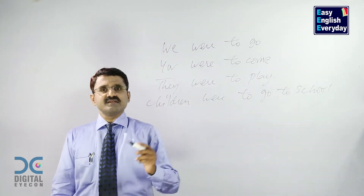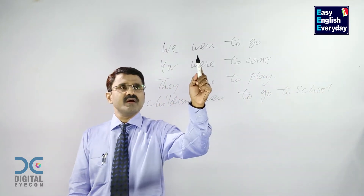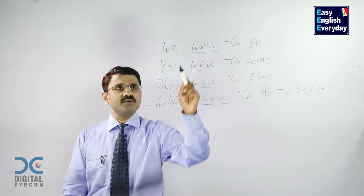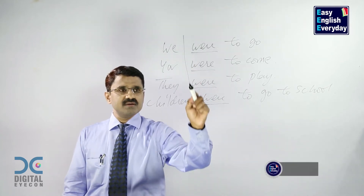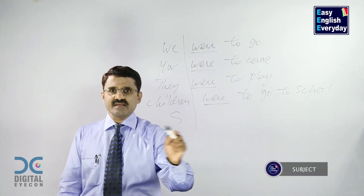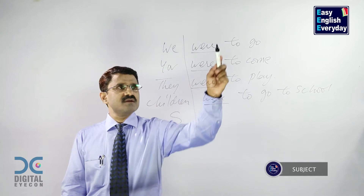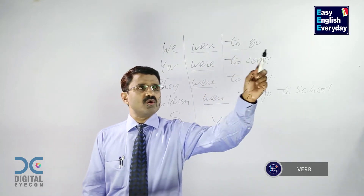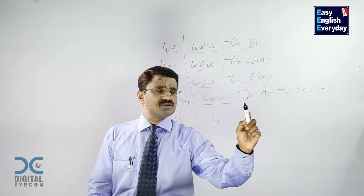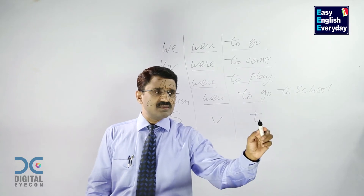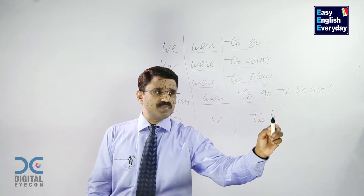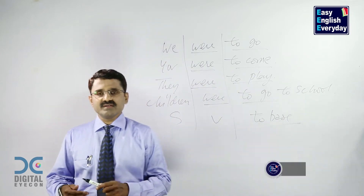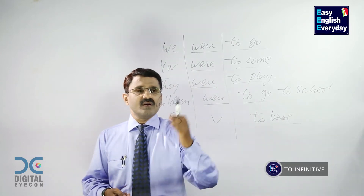In these sentences, we are once again using were — W-E-R-E. This part of the sentence is the subject, and this is the verb: to go, to come, to play, to go to school. This is 'to' plus the base form of the verb — we call it the to-infinitive.